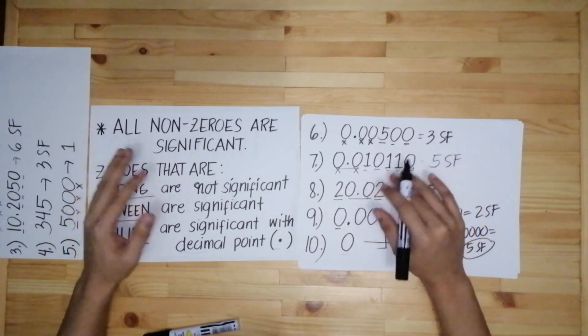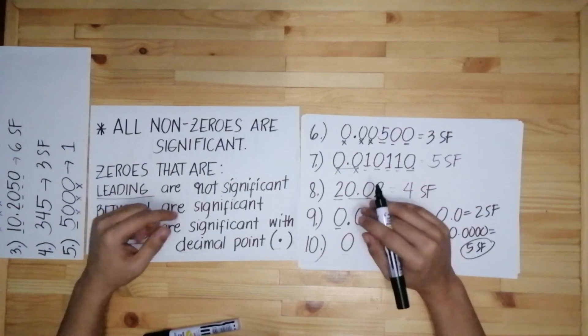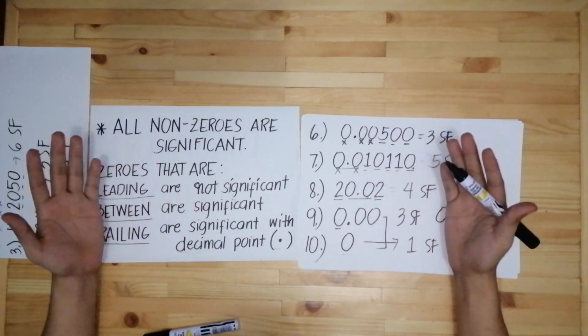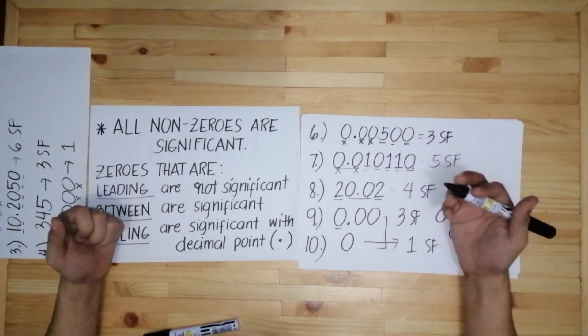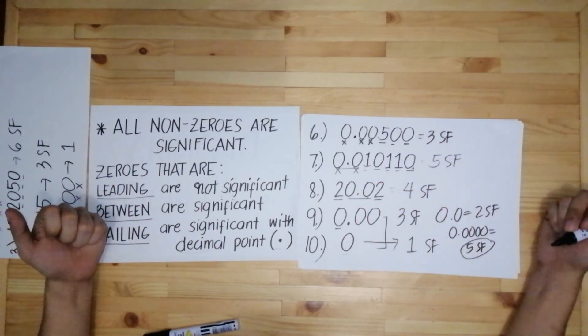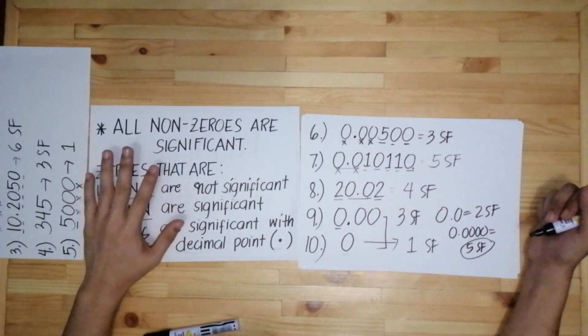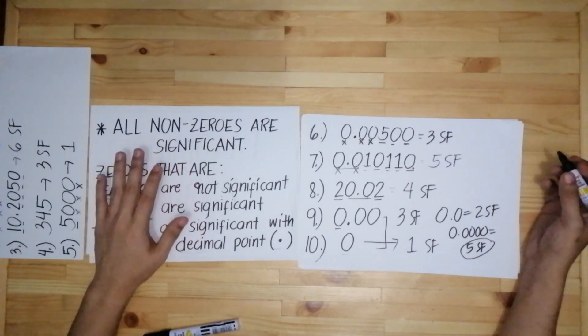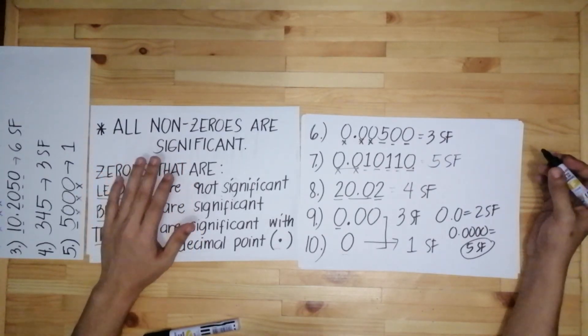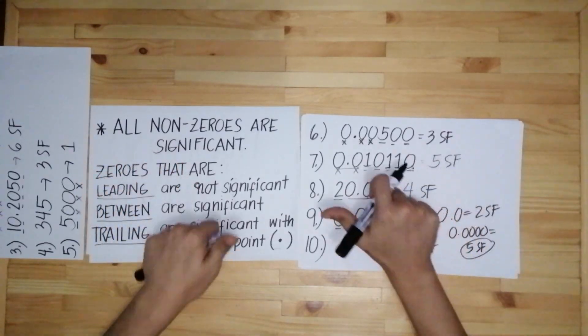So those are the rules in identifying the number of significant figures in the given. I hope that you understand this lesson. Don't forget to subscribe to my channel to keep updated on my next video. Thank you.